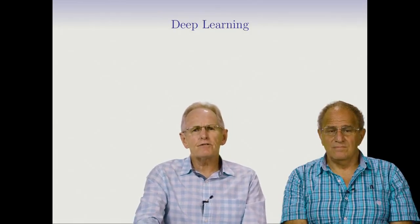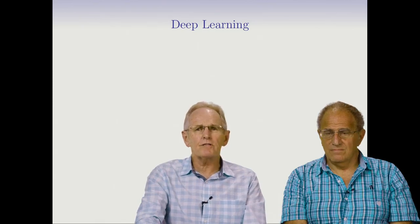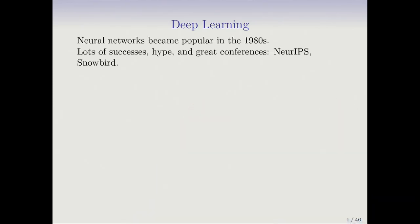Welcome back to the course. In this series of sessions, we're going to be talking about deep learning. This is one of the new chapters in the second edition of Introduction to Statistical Learning. Deep learning is a new name for neural networks, which became popular in the 1980s. There were lots of successes, hype, and great conferences. That's where the start of the NeurIPS sequence and the Snowbird sequence were.